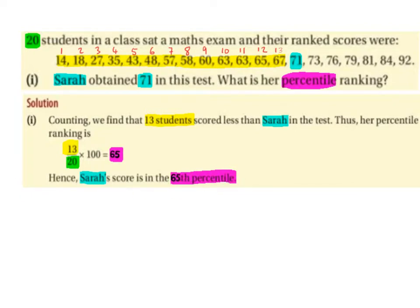So what we did was we counted how many students scored less than Sarah, which is 13, and put it over the total number of students, which is 20, multiplied by 100.